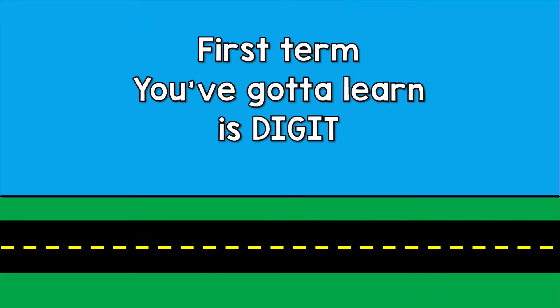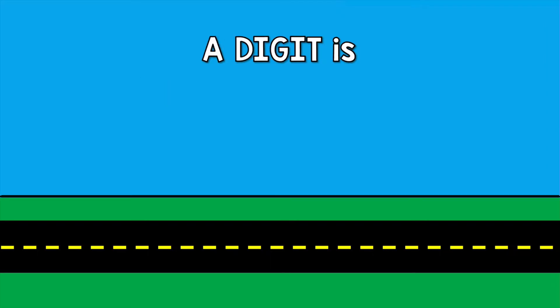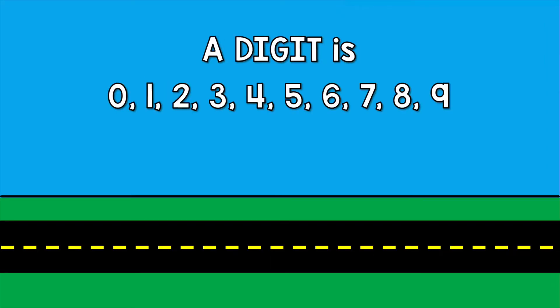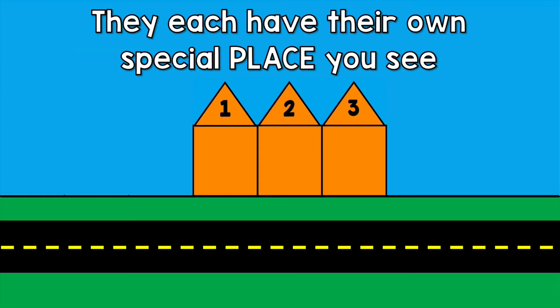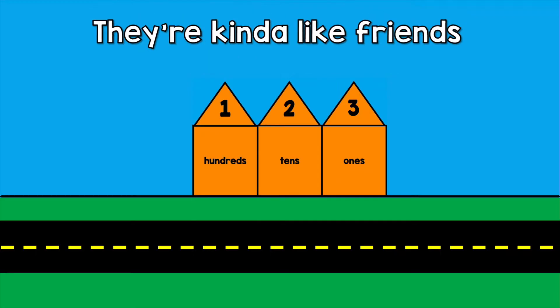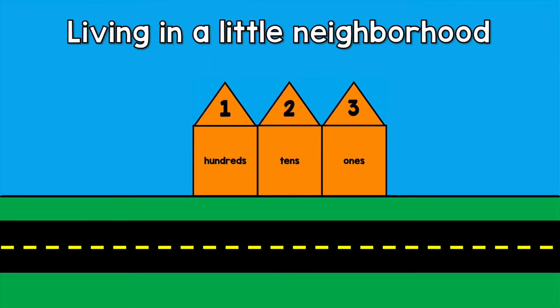First term you gotta learn is digit. A digit is zero to nine. Get it? Give me three digits like one, two, three. They each have their own special place, you see. Three in the ones, two in the tens, one in the hundreds. They're kind of like friends.